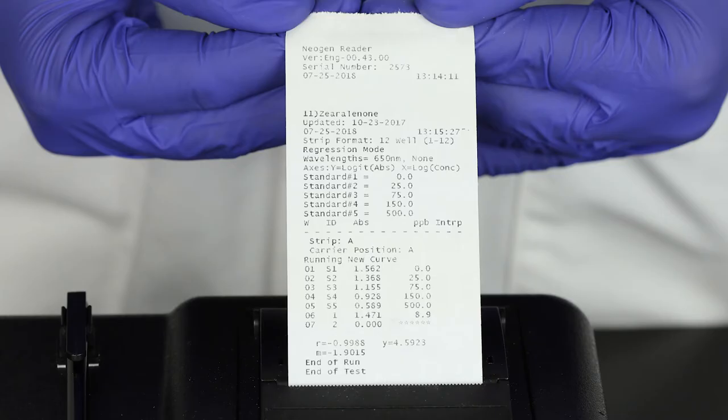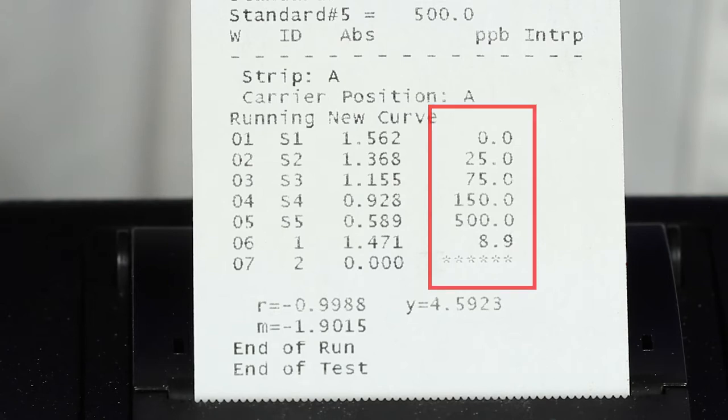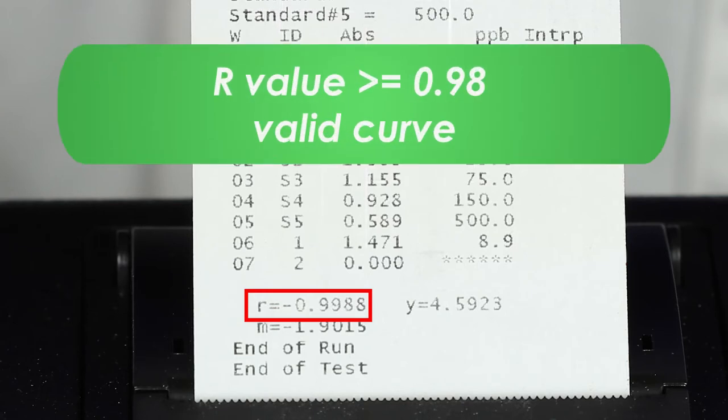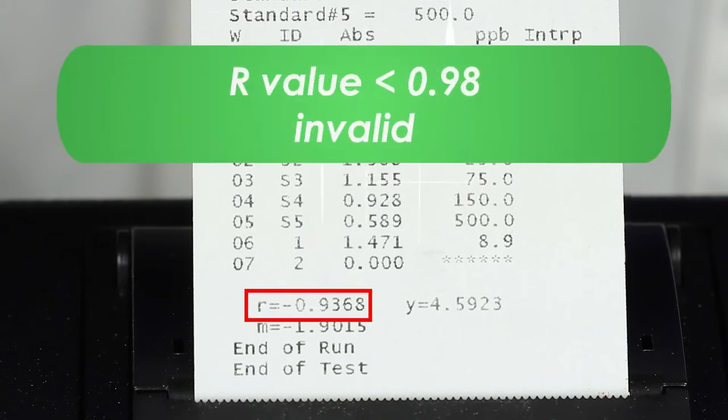The reader will print out the receipt with quantitative values for controls and samples. The middle column is the absorbance of each well. The right hand column shows the exact parts per billion of the controls and sample. Below the columns is the R value. This value must be 0.98 or higher to be a valid curve. If the value is less than 0.98, the curve is invalid and the test must be run again.